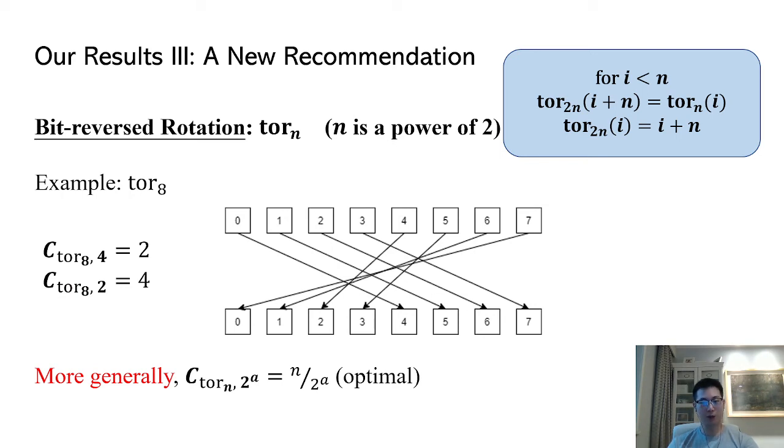Bit-reversed rotation has a very nice property. If k is the power of 2, then the Calvary number is n over k, which is optimal. So it has optimal Calvary numbers for all k which is the power of 2 simultaneously.